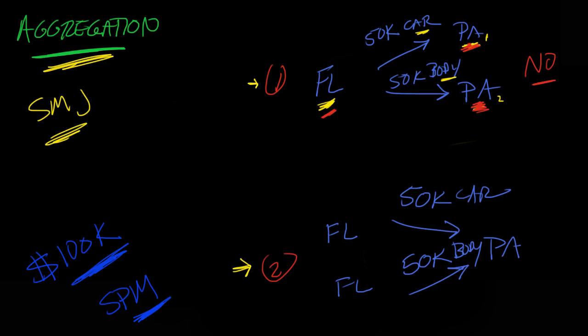Hypothetical two: plaintiff one sues a Pennsylvania defendant seeking $50,000 for damage to the car, and plaintiff two sues the same defendant seeking $50,000 for personal injuries. Is there aggregation? The answer is no — no aggregation. The amounts in controversy are separate; these are separate claims by separate claimants.